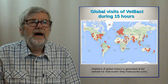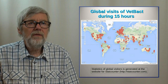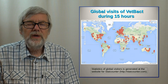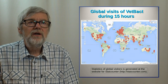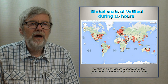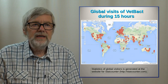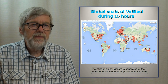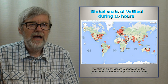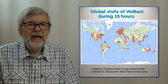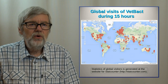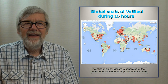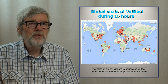This picture is a Google map which shows the sites from which we have had global visits of VetBACT during a period of 15 hours. As you can see, we have visitors from North America, from South America, from Europe, from Africa, from Asia and from Australia. In fact it's only Antarctica, Greenland and Russia from which we don't have any visits.